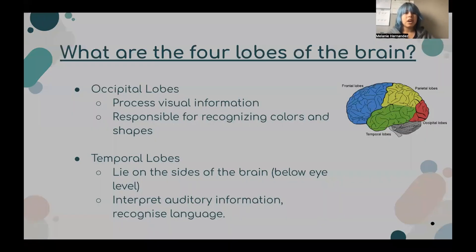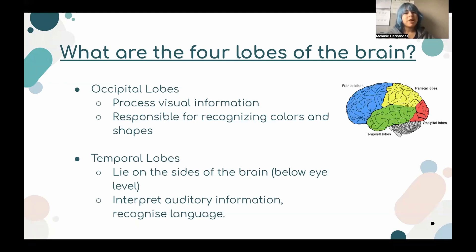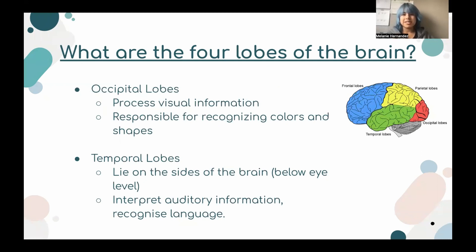The occipital lobe helps us process visual information and is responsible for recognizing colors and shapes, while the temporal lobe, which lies on the side of our brain below the eye level, helps interpret auditory information, recognize language, and form memories.